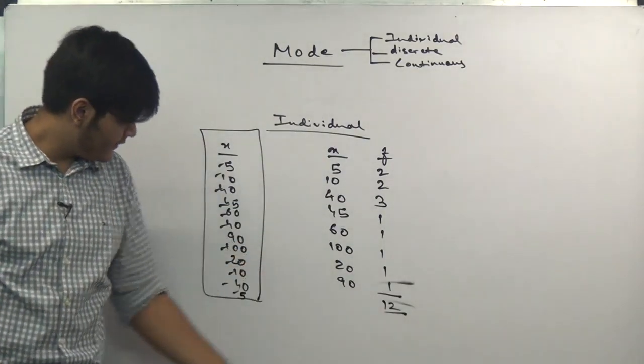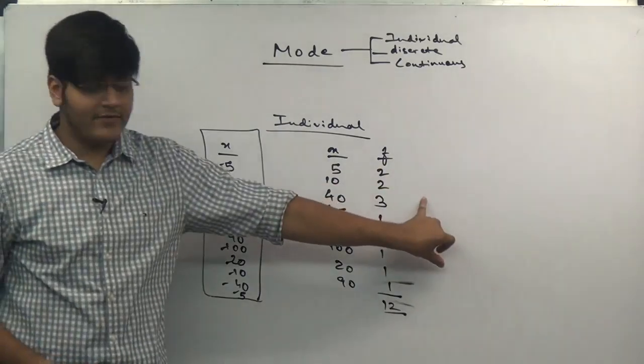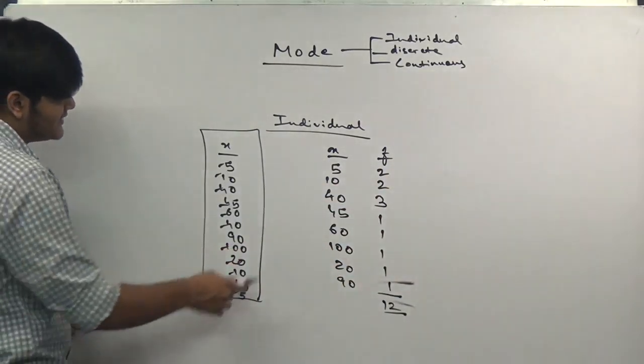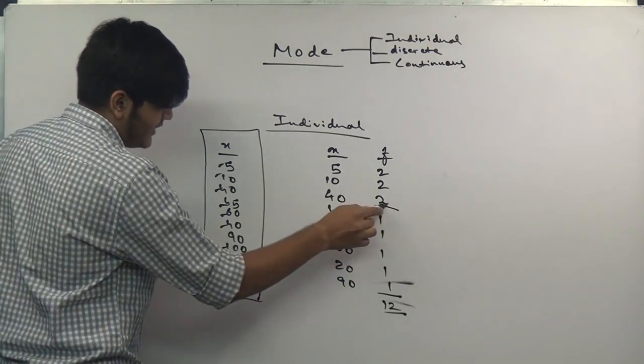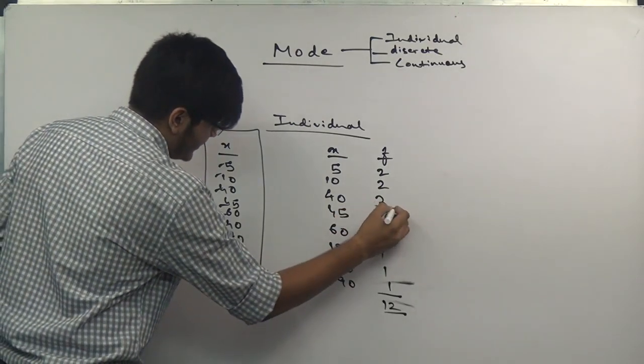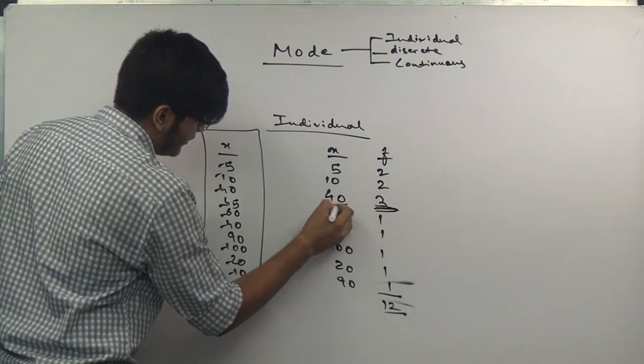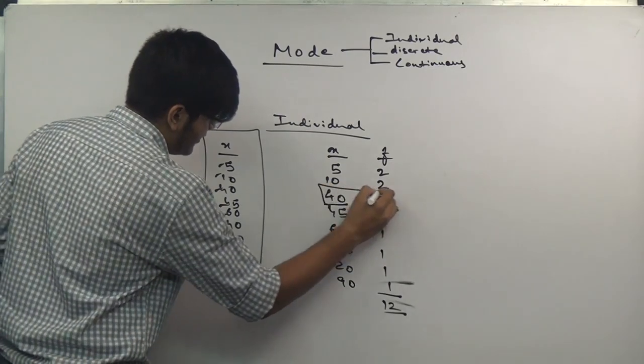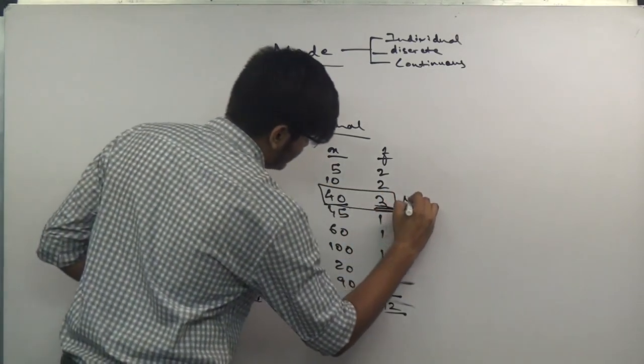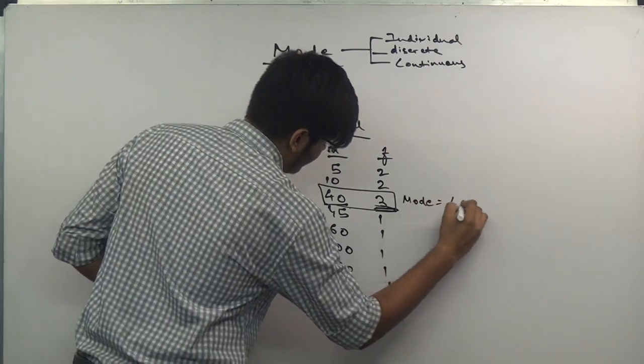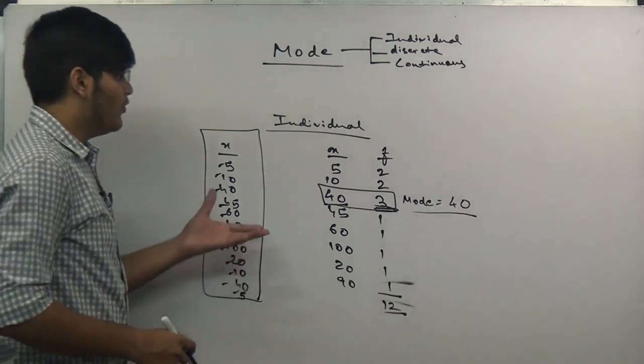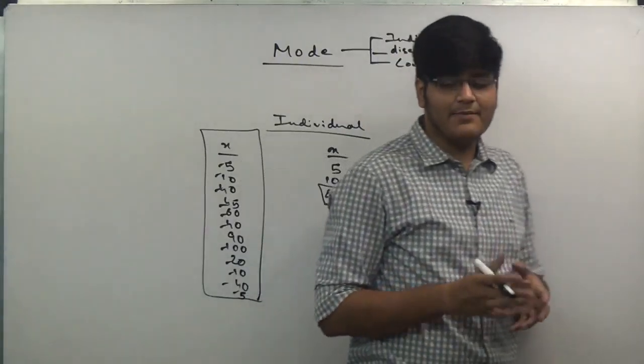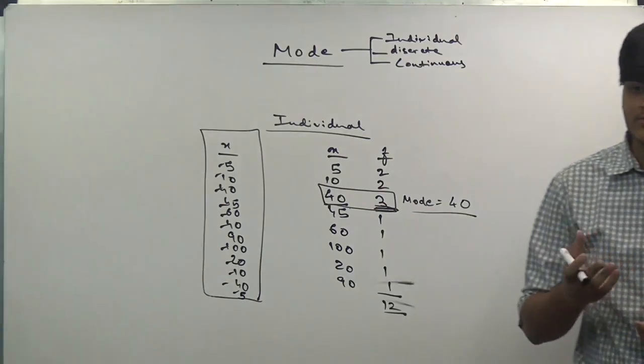12 numbers arranged according to their frequencies. Which class has the highest frequency? 3 is the highest frequency and 40 is the number relating to it, so mode is 40. This is how you compute mode in individual series - the maximum observation becomes mode.